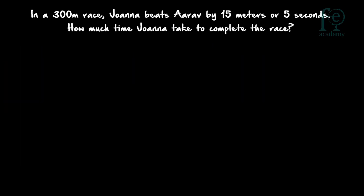Question number 3: In a 300 meter race, Joanna beats Adav by 15 meters or 5 seconds. How much time does Joanna take to complete the race? In a 300 meter race, Joanna is winning. Joanna will be winning by 15 meters or 5 seconds — both the time and distance by which Joanna wins are given. You have to find out the total time taken by Joanna to complete the race.